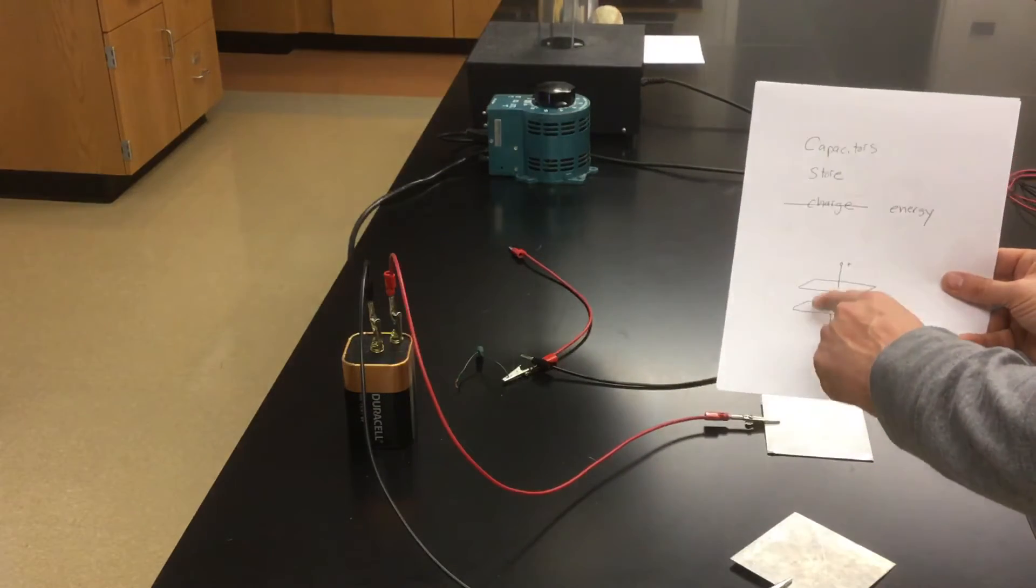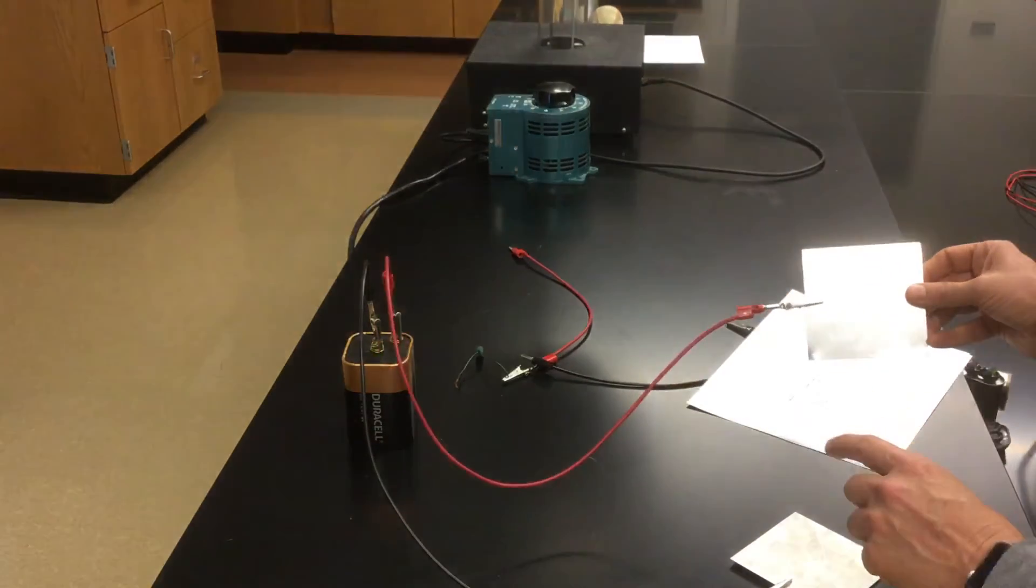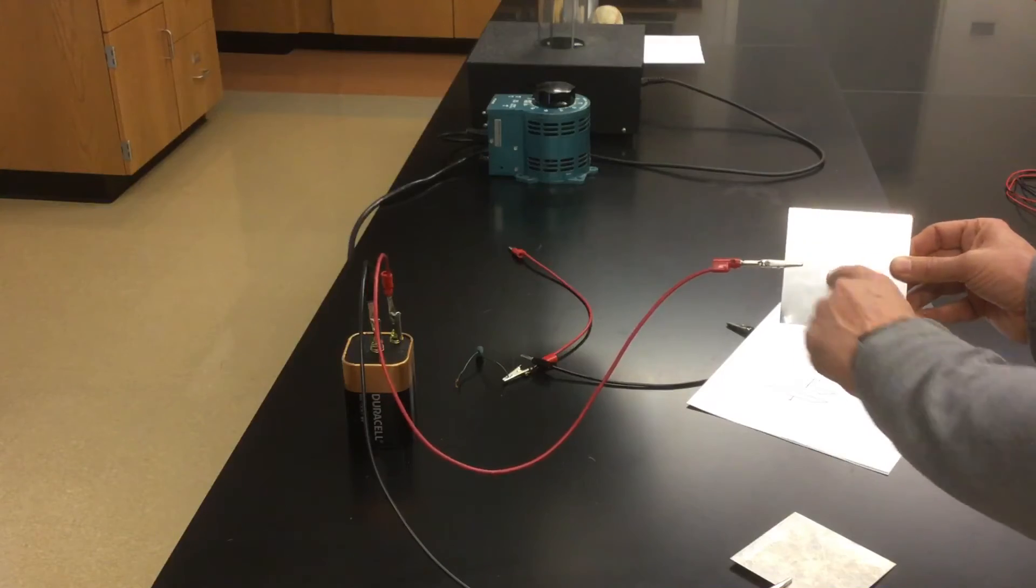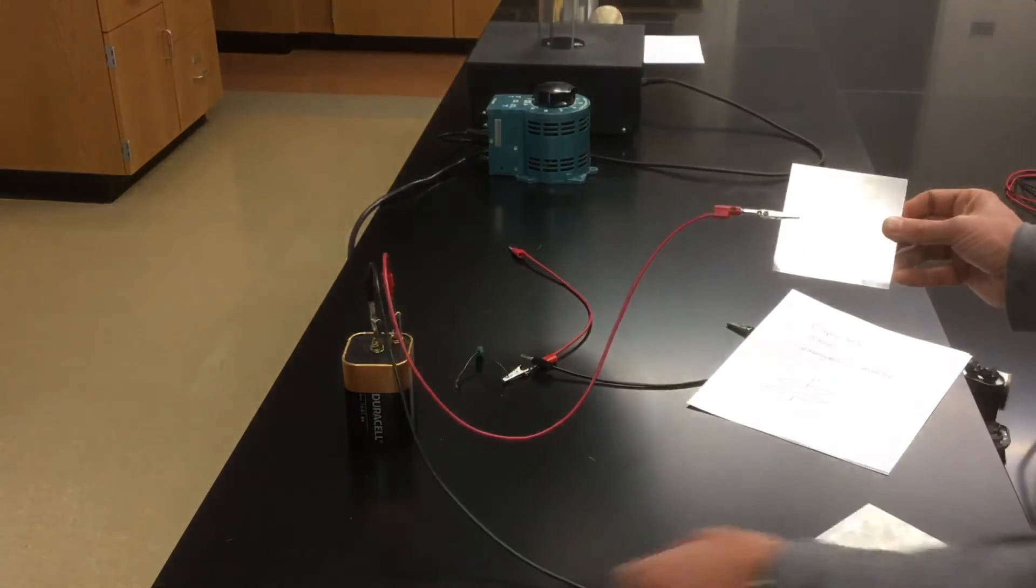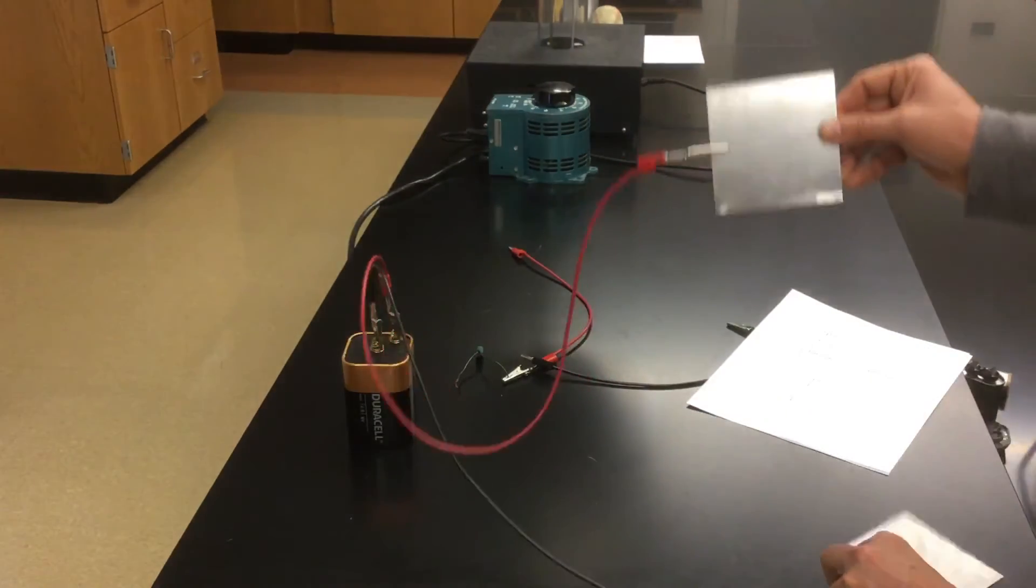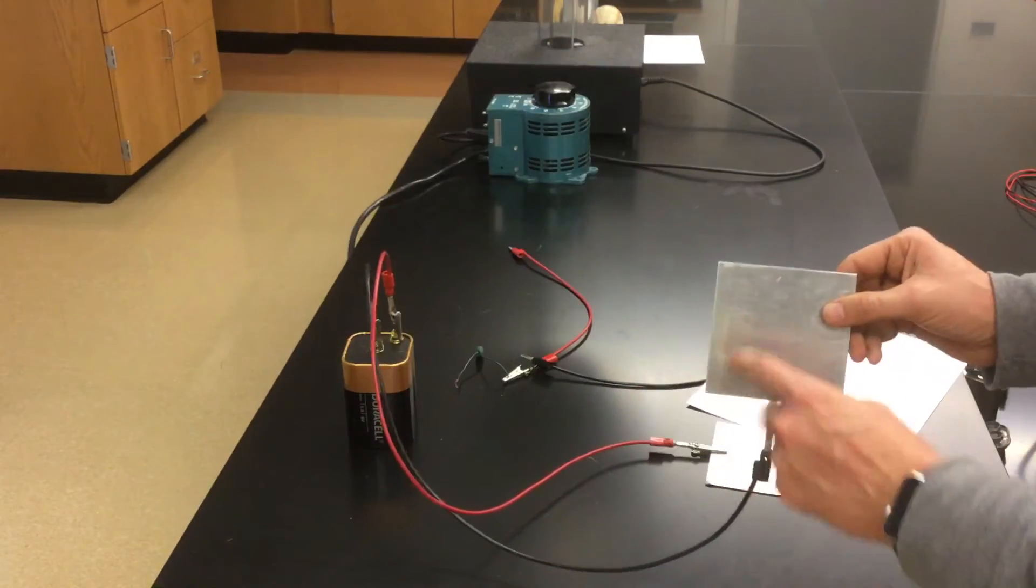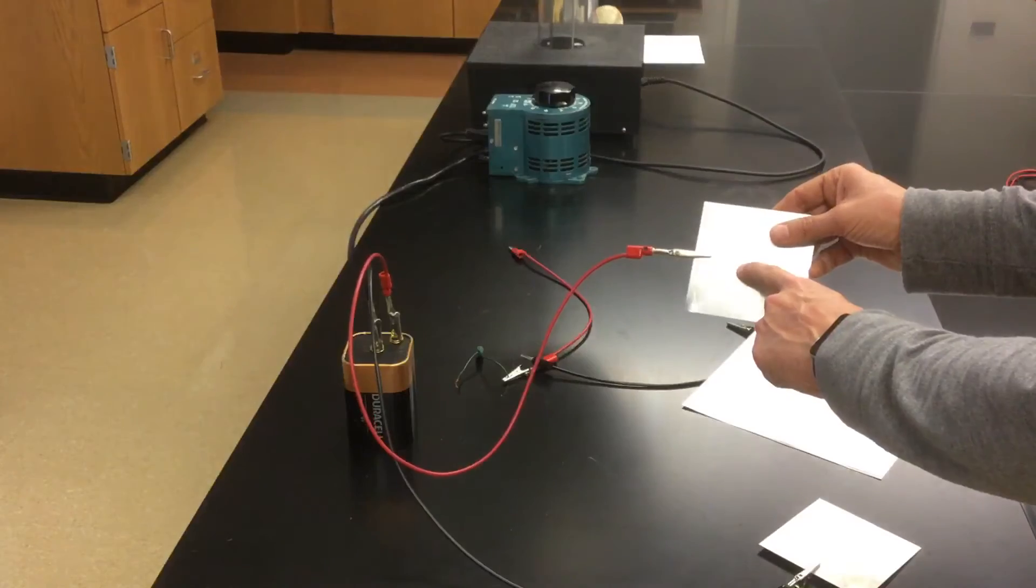What really happens here is the battery has an electric potential that removes electrons from this piece of metal. They get conducted through the wire, through the battery itself, through this wire, and ultimately whatever electrons were taken off of this metal have now been deposited on this metal. So this becomes a negatively charged conductor. This becomes the positively charged conductor.